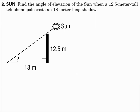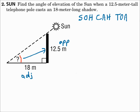Number two: find the angle of elevation of the sun when a 12.5-meter-tall telephone pole casts an 18-meter-long shadow. I'm looking for the angle of elevation. The telephone pole is vertical — that's my 12.5. The shadow is on the ground, so it's horizontal. Consider those in your triangle. Now identify the sides: the side across from our angle is opposite, the leg next to it is adjacent. Remember SOHCAHTOA — adjacent and opposite means use tangent.